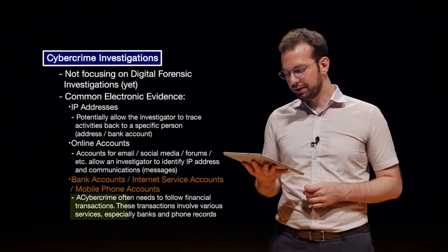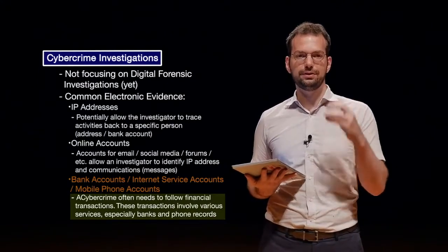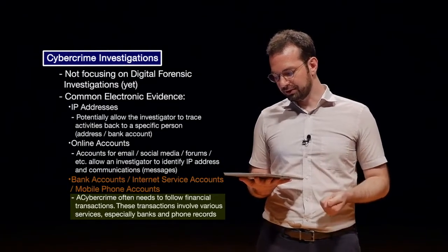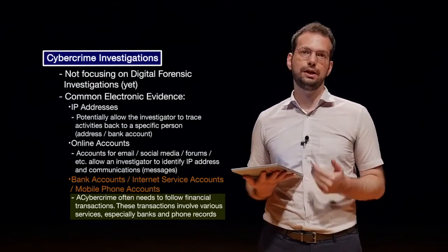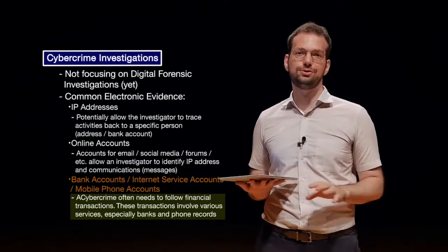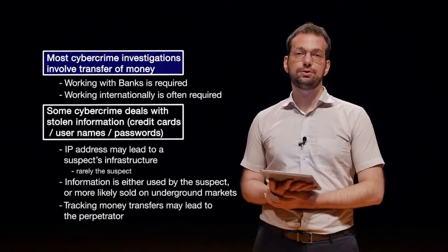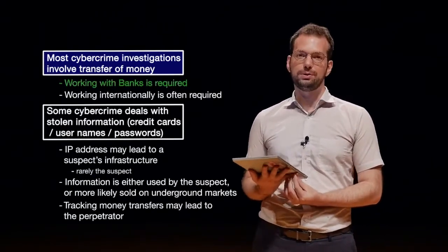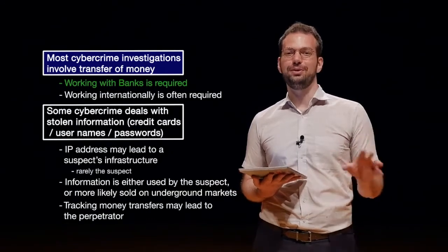Cybercrime investigations often need to follow financial transactions — basically, follow the money. Hackers find it relatively easy to hack, but whenever they try to get the money out, that's when most people get caught. These transactions involve various services, especially banks and phone records, which can be traced through audit records to find out who transferred it, where it went, and who withdrew or exchanged it. Most cybercrime investigations involve a money transfer, and that's how most criminals are found. Working with banks is required, which means it's mostly law enforcement unless a bank is willing to work with an organization.